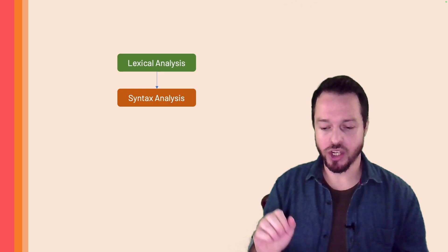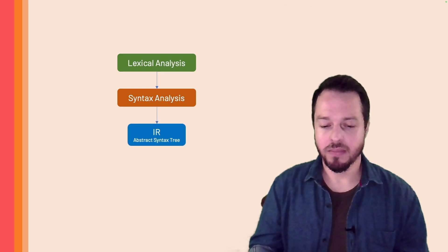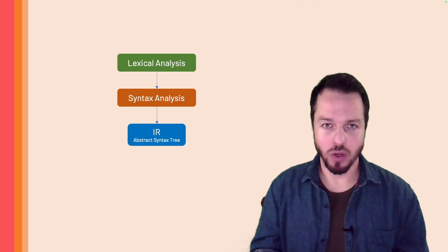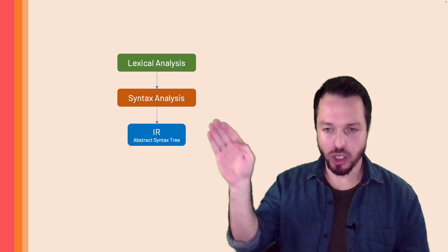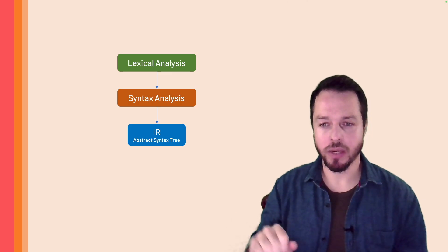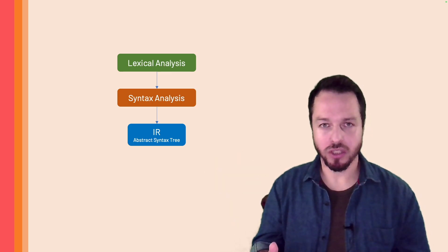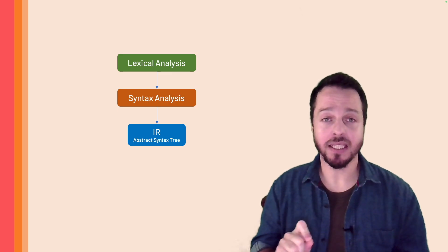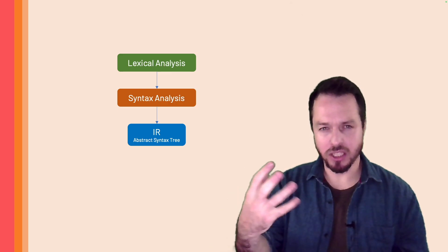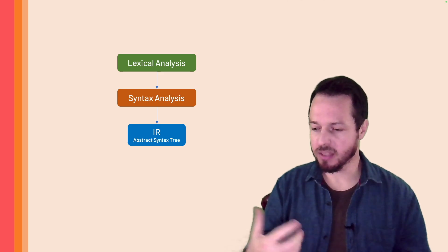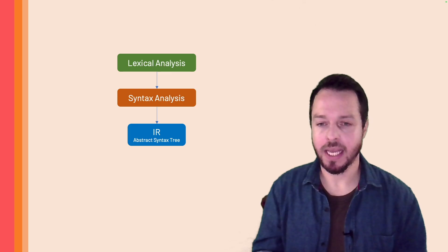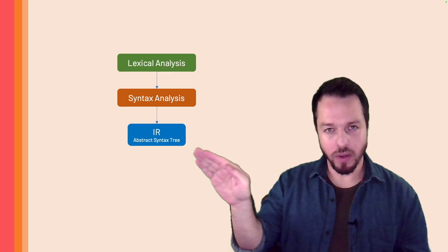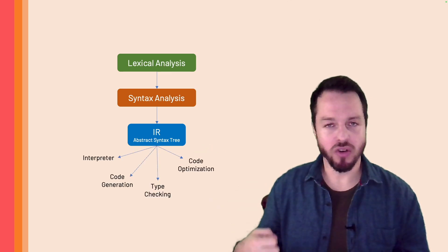Syntax analysis is going to generate an intermediate representation for us — in our case, a tree data structure. Our source code goes through lexical analysis, then syntax analysis and parsing, and generates a model in memory called an abstract syntax tree. This AST is a model with trees and nodes created for each expression and statement found in our source code.